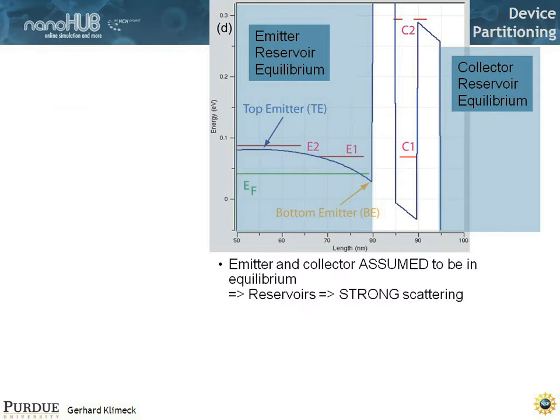So even though maybe you have band bending and quantum states, you treat the whole left as a reservoir, as an emitter. That means you don't compute current in that region either. You just assume that there's a flat Fermi level and there is no current. And you do the same for the collector.